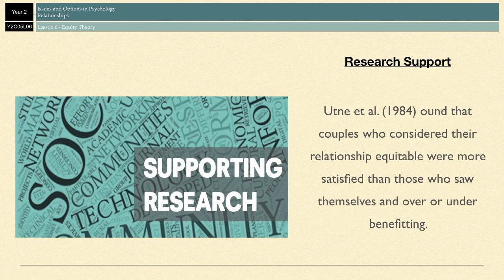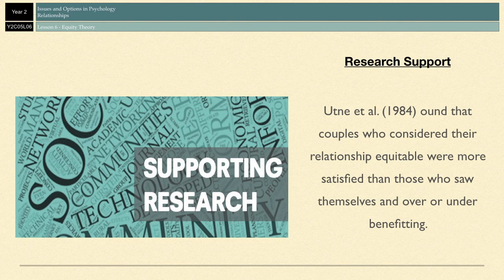First off, we have some research support. Supporting evidence includes studies of real-life relationships that confirm Equity Theory as a more valid explanation than Social Exchange Theory. For example, Utne et al. in 1984 carried out a survey of 118 recently married couples, measuring equity with two self-report scales. These husbands and wives were aged between 16 and 45 and had been together for more than two years before marrying. The researchers found that couples who considered their relationship equitable were more satisfied than those who saw themselves as over- or under-benefiting. This confirms the central prediction of Equity Theory, which increases its validity as an explanation for romantic relationships.